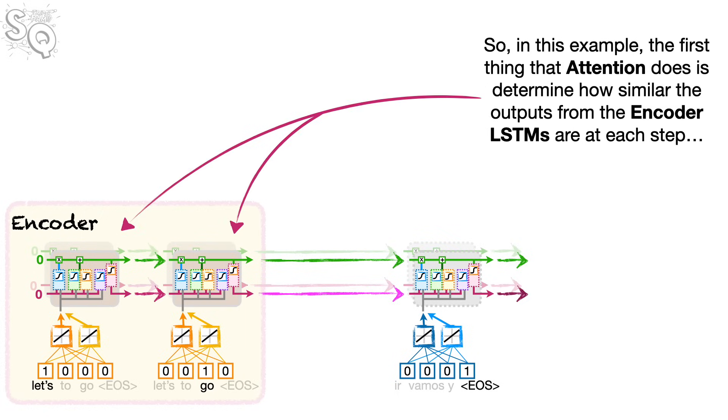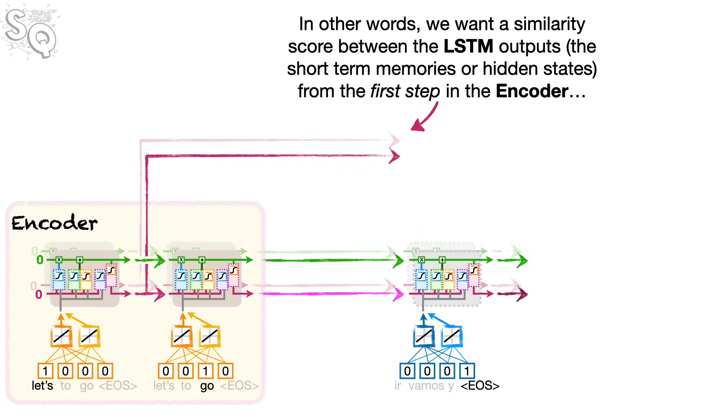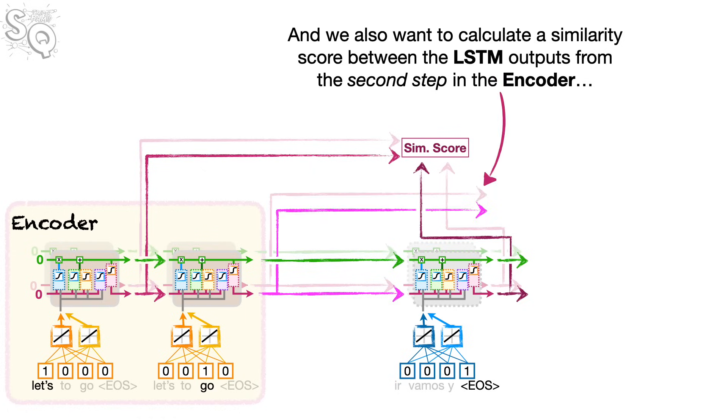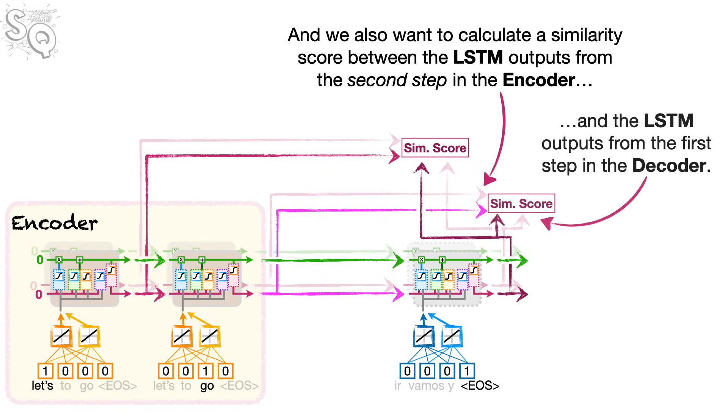So, in this example, the first thing that attention does is determine how similar the outputs from the encoder LSTMs are at each step to the outputs from the decoder LSTMs. In other words, we want a similarity score between the LSTM outputs, the short-term memories, or hidden states, from the first step in the encoder, and the LSTM outputs from the first step in the decoder. And we also want to calculate a similarity score between the LSTM outputs from the second step in the encoder and the LSTM outputs from the first step in the decoder.